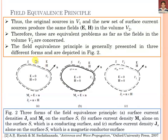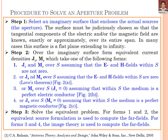For forms one and two, the equivalent source formulation can be used to compute the far field. For forms three and four, image theory is used to compute the far field. In this lecture, we have discussed some important theorems and related theory through which we can understand the step procedure of the field equivalence principle, along with different types of analysis involving magnetic and electric current densities. We also discussed the uniqueness theorem to better understand the field equivalence principle.